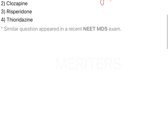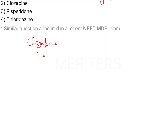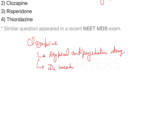First, let's talk about a very famous drug — Clozapine. This drug is the first atypical antipsychotic. It is distinct from other drugs because it has a weak D2 blocking action, which results in very few or no extrapyramidal symptoms.